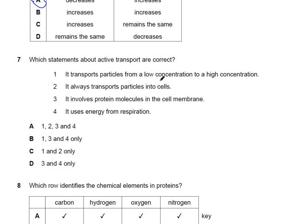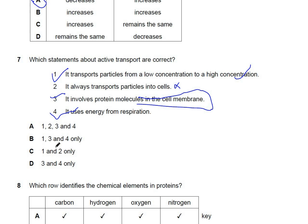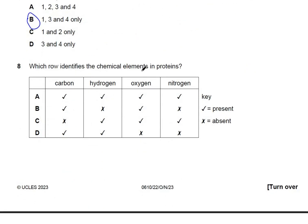Question 7: which statements about active transport are correct? Statement 1 — transport from low to high concentration — is correct, as active transport moves substances against the concentration gradient. Statement 2 — always transports into the cell — is incorrect, as it can also transport particles out. Statement 3 — involves protein molecules — is correct. Statement 4 — uses energy from respiration (ATP) — is correct. The answer is B: one, three, and four.